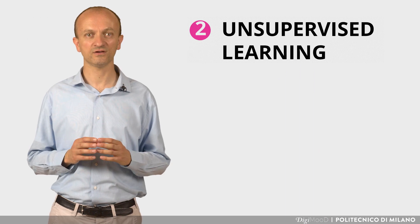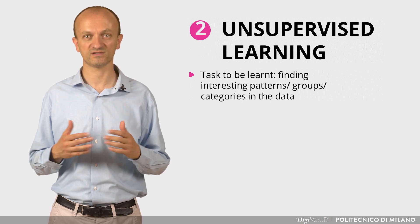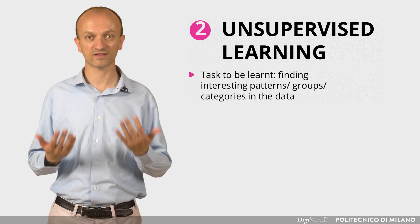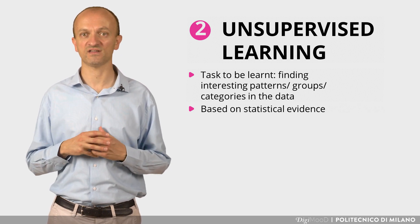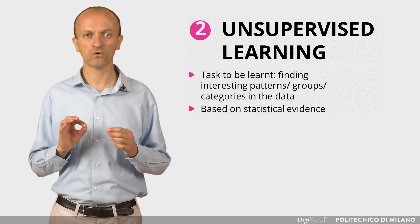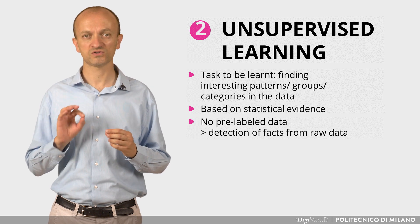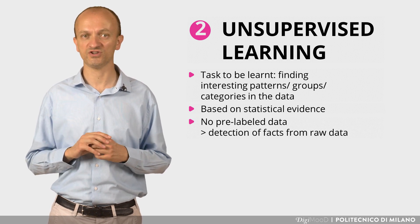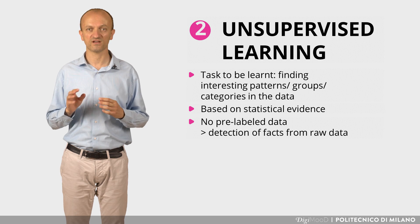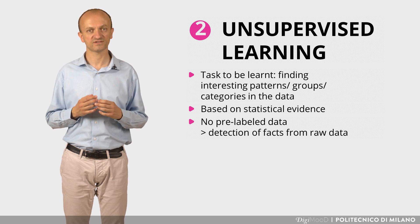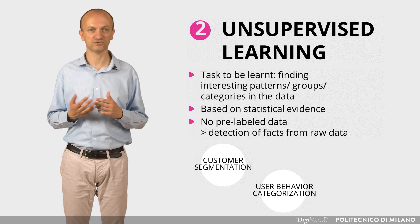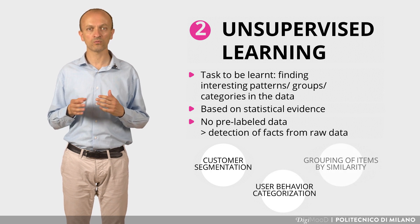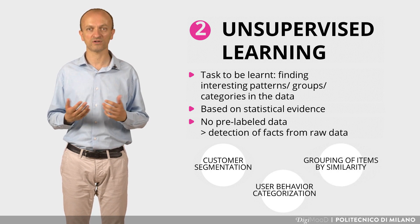Unsupervised learning consists of finding groupings, patterns or categories of data based only on the evidence present in the data itself. In this case, therefore, no solved examples are provided to the machine. These techniques are used to solve problems such as customer segmentation, categorization of user behavior or grouping of contents or products based on their similarity.